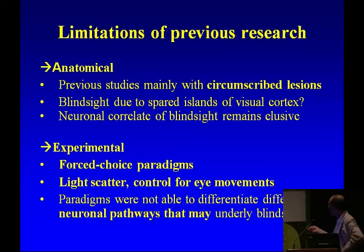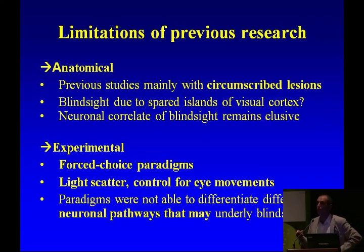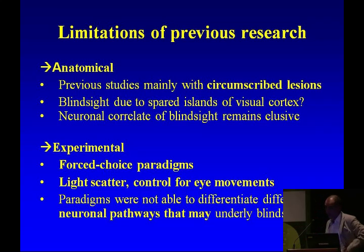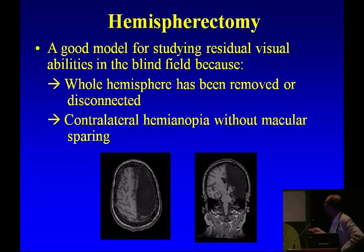There's also light scatter and eye movement control to consider. We've done these experiments looking at light scatter, and there definitely is light scatter that may be used as a cue, suggesting that blindsight could be artifactual. So what we did is gain access to hemispherectomy subjects — extraordinary subjects. This is a good model for studying residual visual abilities because the whole hemisphere has been removed or disconnected.